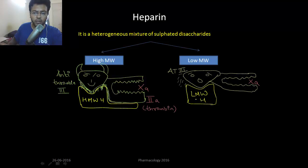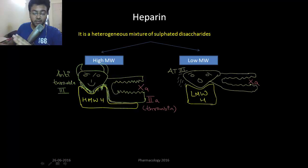Whereas low molecular weight Heparin only provides a pillow to antithrombin 3. So antithrombin 3 can only inactivate factor 10 — it cannot inactivate thrombin.